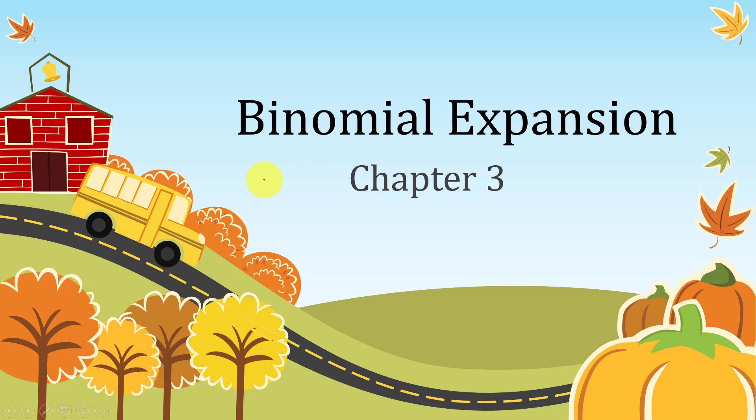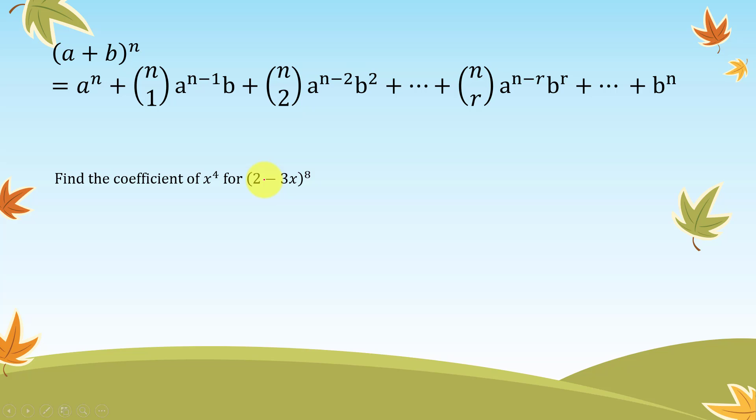Okay, so binomial expansion, the third chapter. Find the coefficient of x to the power of 4 for (2 minus 3x) to the power of 8.